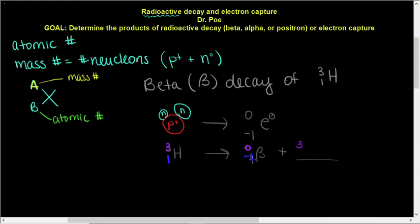Same deal with the bottom number, the atomic number, which we have 1 on the left side, so we know everything on the right side has to add up to 1. We have a negative 1 here. So we have to ask ourselves, what minus 1 will give us 1? The answer, of course, being 2.